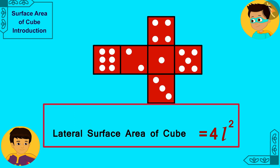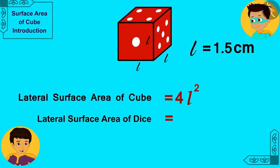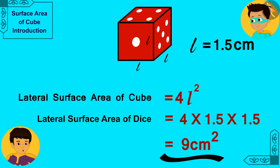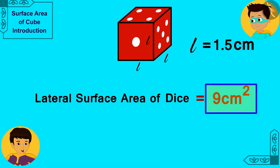Hey Manas! We also found the formula for the lateral surface area of a cube. Let me write the length of the sides of my dice. That is 1.5 cm in the formula. Look Thomas! This cube shaped dice has a lateral surface area of 9 cm². This means we will need 9 cm² of paper to cover the lateral sides of this dice.